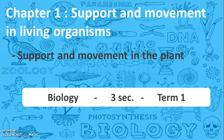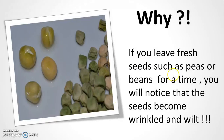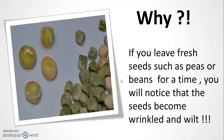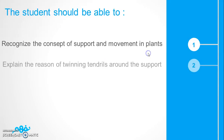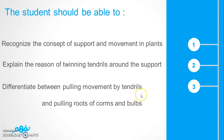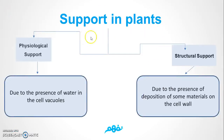Hello everyone. In this chapter, support and movement in living organisms, we'll talk about support and movement in plants. But first, if you leave fresh seeds such as peas or beans for a time, you will note that the seeds become wrinkled and wilt. At the end of this lesson you should be able to recognize the concept of support and movement in plants, explain the reason for tendrils twining around a support, and differentiate between pulling movement by tendrils and pulling roots of corms and bulbs.